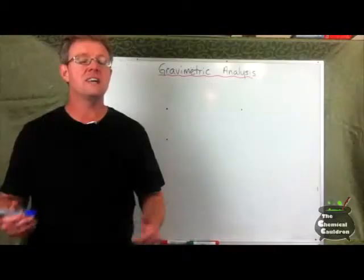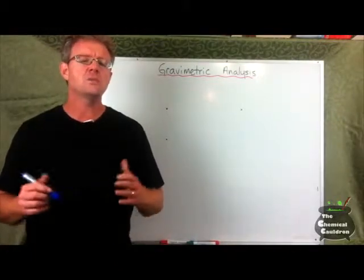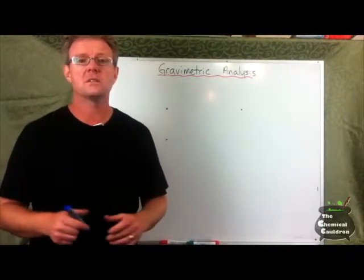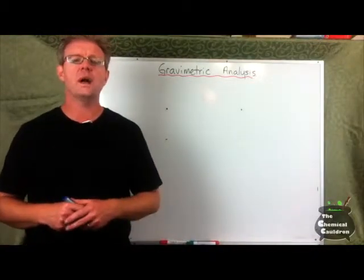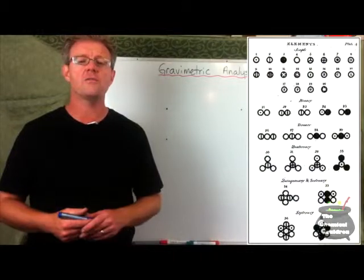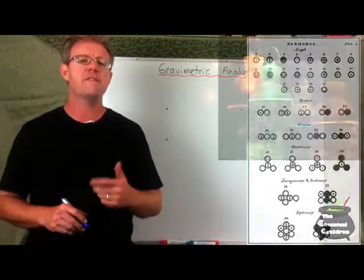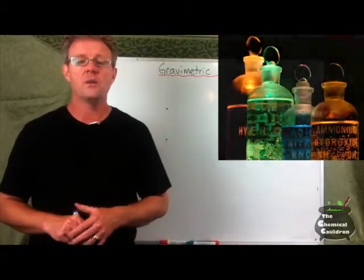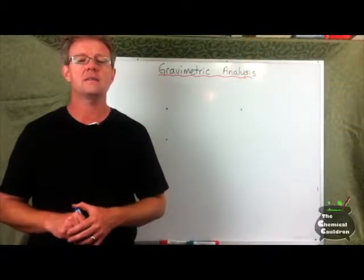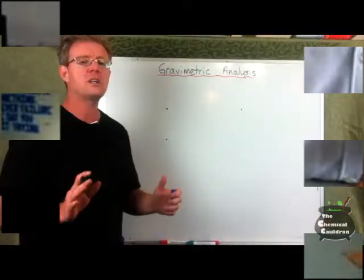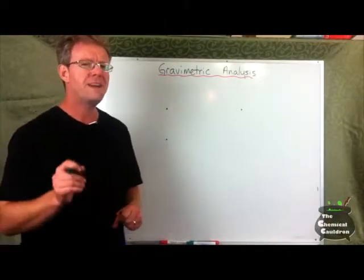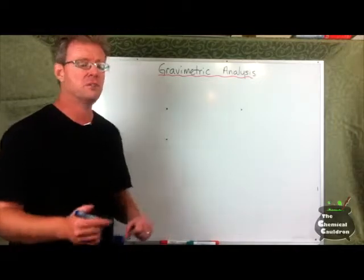So gravimetric analysis even today is very important. It helps us work out the formulas for compounds. Not only today, but historically, it was used to weigh and determine the formula of many ionic and covalent substances. In fact, we'll be doing a practical later on where we actually measure out the mass of magnesium oxide and show that it is a one-to-one relationship using gravimetric analysis. Just recently, however, we've been in the lab and we've been looking at trying to solve a crime based on gravimetric analysis and percentage composition.